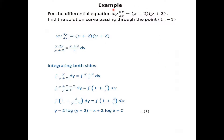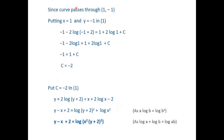For the example xy·dy/dx = x + 2 and y + 2, find the solution curve passing through the point (1, −1). By observation, variables can be separated as y/(y+2)·dy = (x+2)/x·dx. Integrating both sides using integration concepts, and applying the condition that the curve passes through (1, −1), we get the fixed constant C = −2, yielding the particular solution.